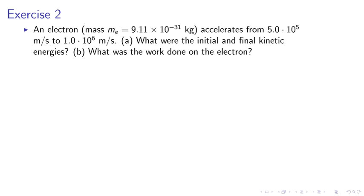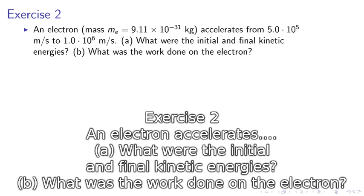Exercise 2. An electron accelerates from 5 times 10^5 meters per second. Part A: What are the initial and final kinetic energies? Part B: What was the work done by the electron?